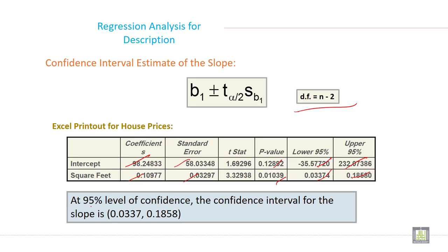At 95% level of confidence, the confidence interval for the slope is 0.0337 to 0.1858. This is the lower limit and this is the upper limit of the confidence interval. There is a range between the confidence interval lower limit and upper limit.